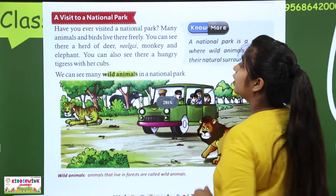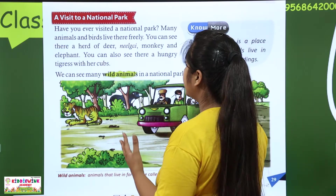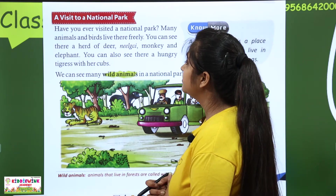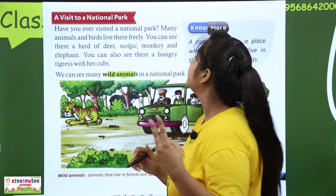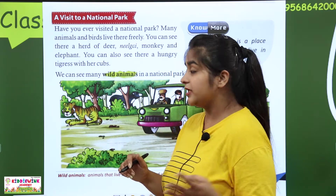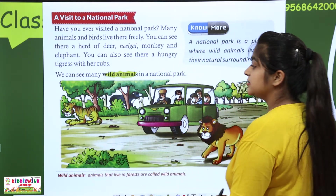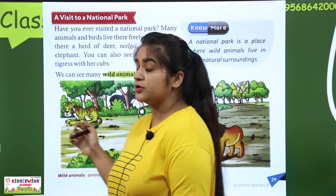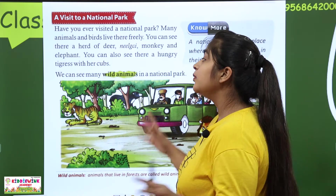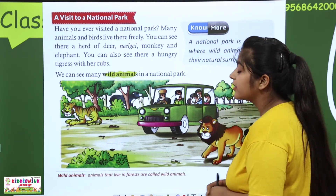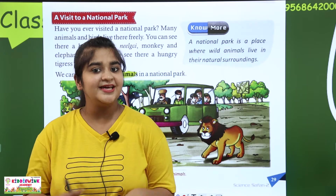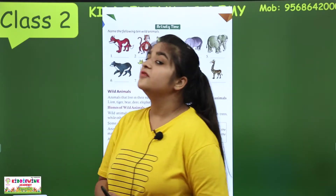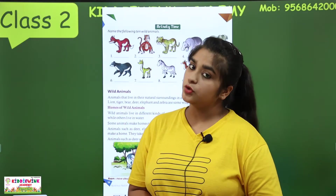You can see a herd of deer, nilgai, monkey and elephant. You can also see hungry tigers and cubs — you can see their babies. We can see many wild animals in a national park, where animals live freely.